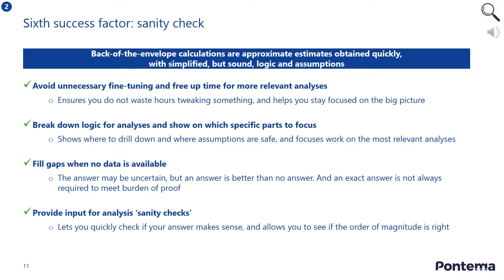The sixth and final key success factor when executing high-quality analysis is to always sanity check your outputs. As well as double-checking the numbers to ensure they are accurate and consistent, you also need to be asking yourself if the numbers in the analysis make sense, whether the points raised are reasonable and relevant, and whether the details will be credible with your manager. One effective way to do this is by using back-of-the-envelope calculations to check for accuracy and focus. These are approximate estimates obtained quickly with simplified, but sound, logic and assumptions.